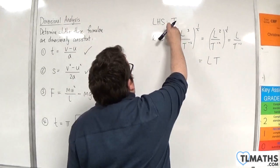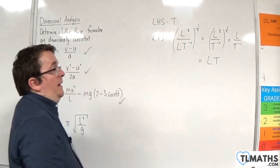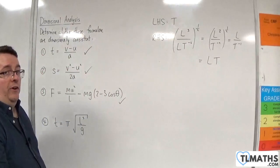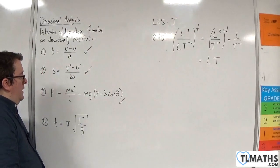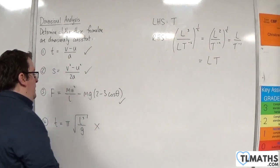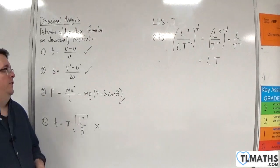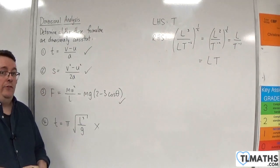The left-hand side was time T, but the right-hand side is a length times a time — LT. So that is not right; that is not dimensionally consistent.